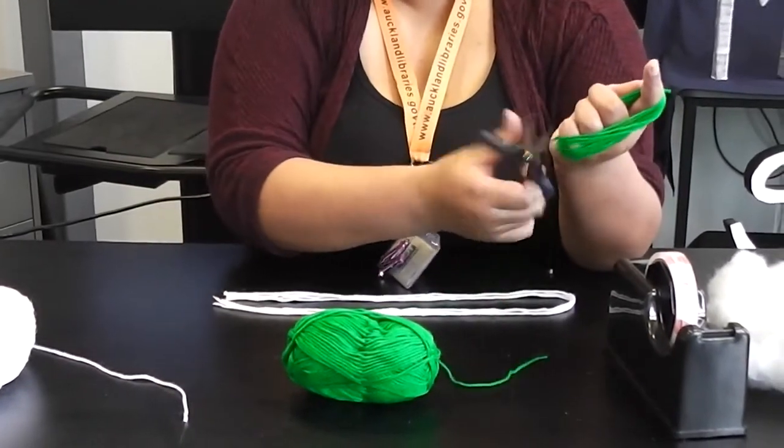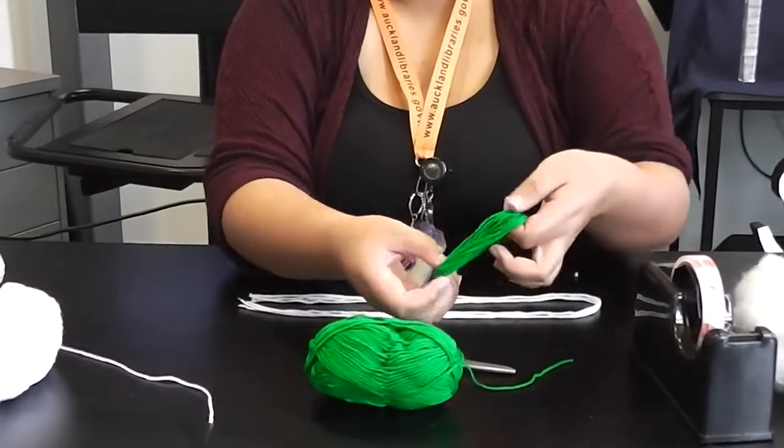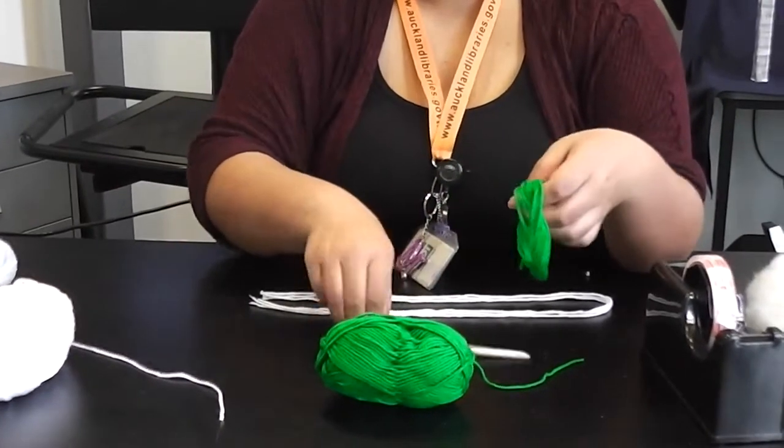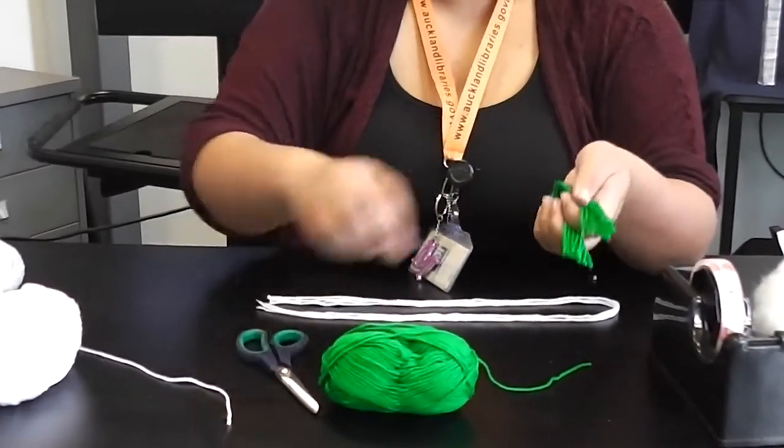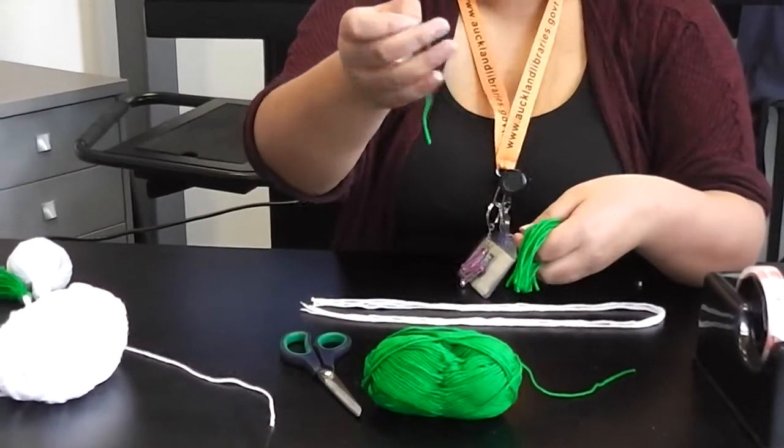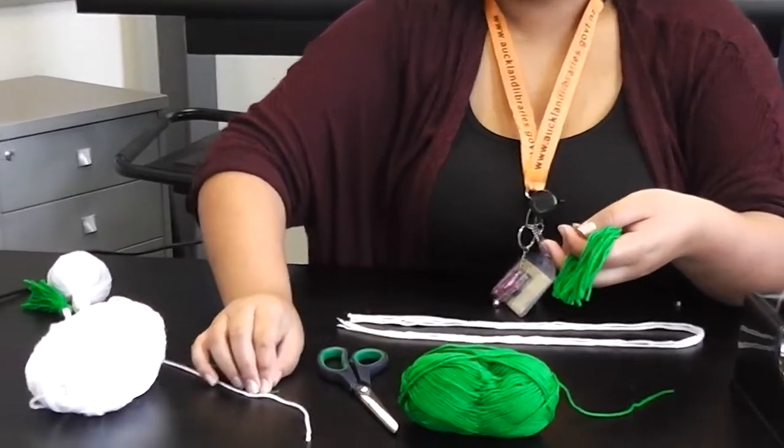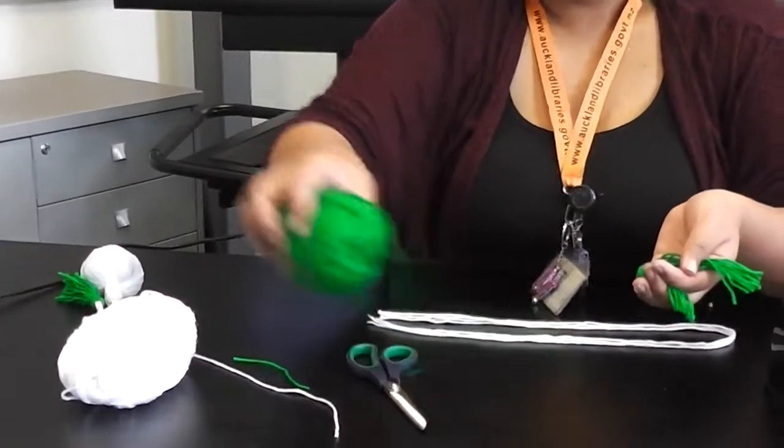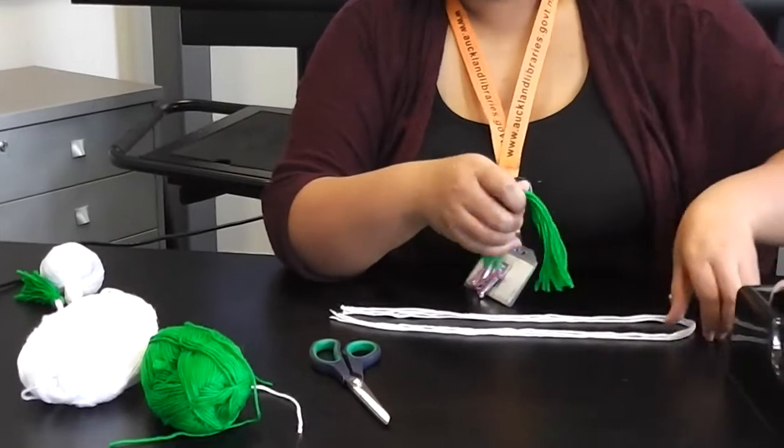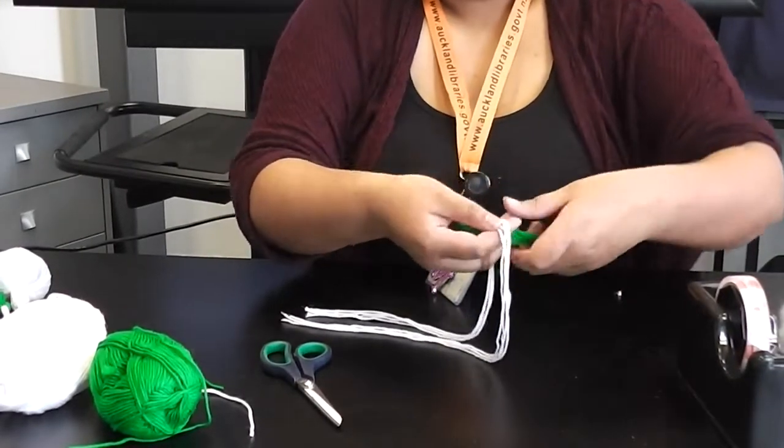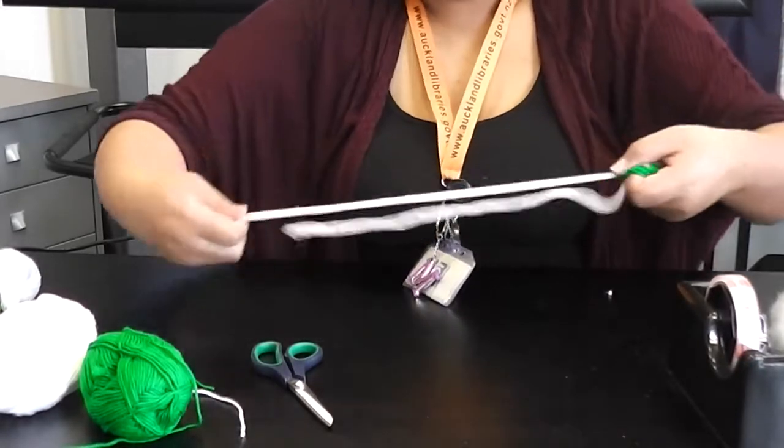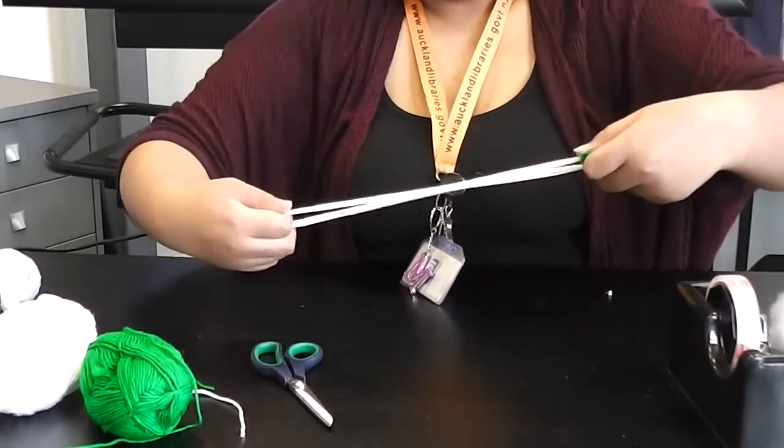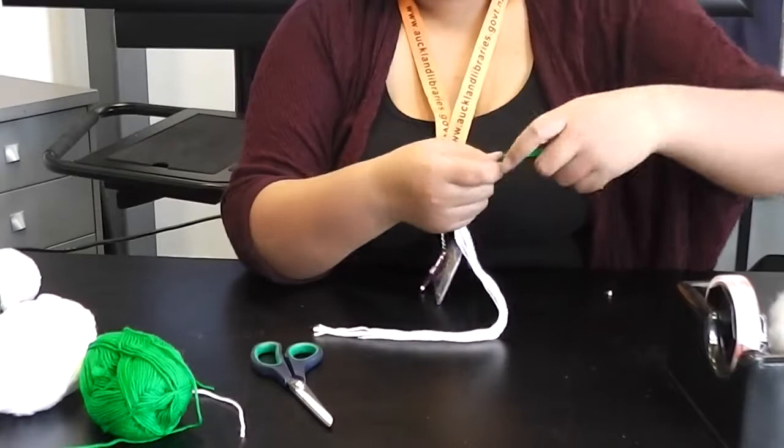Then we're just going to snip there and we'll snip it in half over here. If you mistakenly cut one like this that's fine you can just keep it on the side for later. Our little string is actually quite useful for when you're doing some other part of the poi. Then we're just going to thread it through your white or other coloured wool like this so that it looks like so.